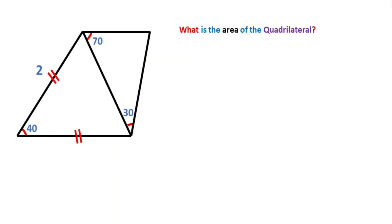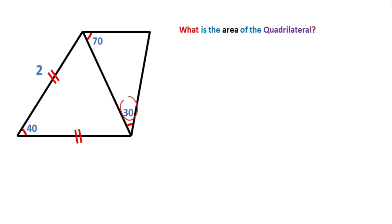Hello everyone. In this video we have one quadrilateral. These two sides are given two units, and this angle here is given 40°, here is given 70°, and here is given 30 degrees. The area of the quadrilateral is asked.